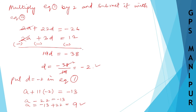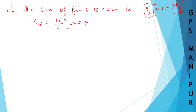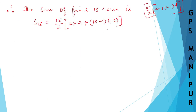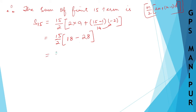So S15 equals 15 divided by 2 times 2A. A is 9, so 2 into 9 is 18. Plus N minus 1 is 15 minus 1 equals 14, times D which is minus 2, so 14 into 2 is 28, giving minus 28. So 15 divided by 2 times 18 minus 28 equals 15 divided by 2 times minus 10. Simplifying: 15 times minus 5 equals minus 75.